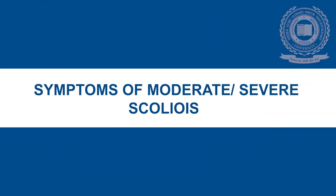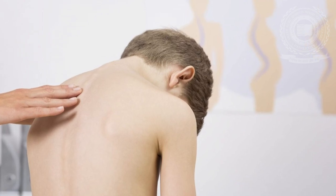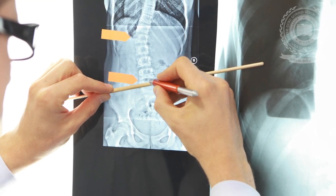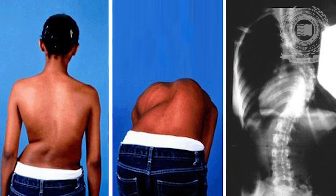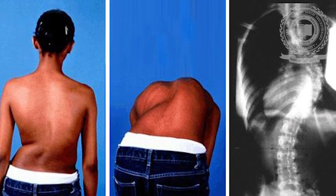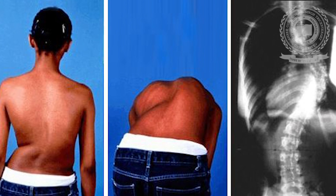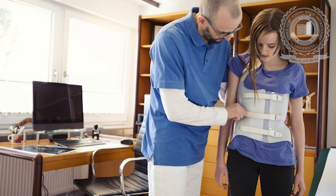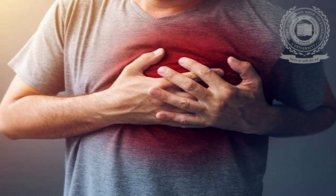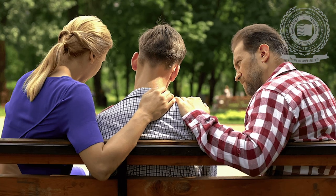Symptoms of moderate or severe scoliosis. Only about 10% of people with idiopathic scoliosis have a curve that progresses beyond mild and needs treatment. If that progression happens, the deformity becomes more obvious and more likely to cause noticeable symptoms. Some of the more common symptoms in moderate or severe scoliosis include changes with walking, reduced range of motion, trouble breathing, cardiovascular problems, pain, and lower self-esteem.